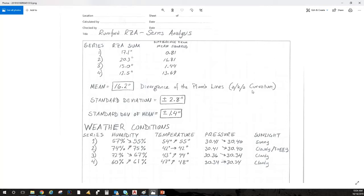Or also known as curvature. Now the standard deviation of that mean is plus or minus 1.4 seconds. Now remember from the National Geodetic Survey, what was the predicted divergence of the plumb lines based on those two locations? It was 15.0 seconds.